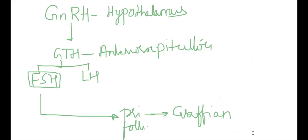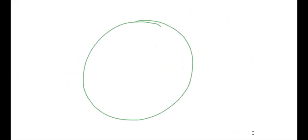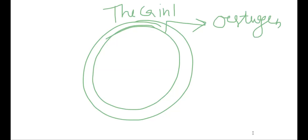Follicle-stimulating hormone (FSH) converts a primary follicle into a Graafian follicle. When the Graafian follicle is formed, its theca interna secretes the hormone estrogen. So the sequence is: FSH stimulates development of the primary follicle into a Graafian follicle, and the theca interna of that Graafian follicle starts the secretion of estrogen.